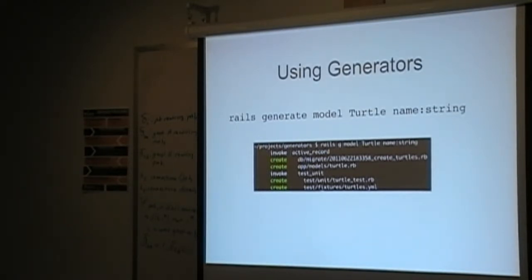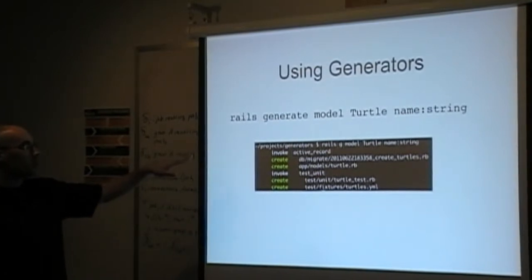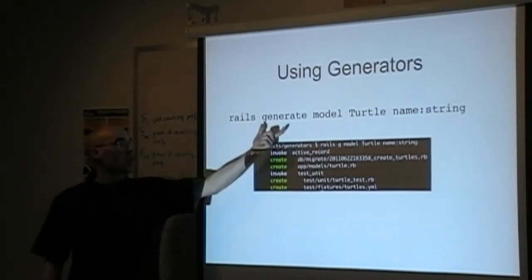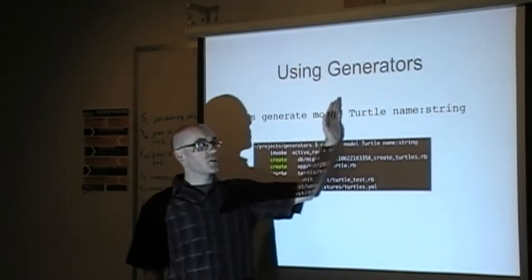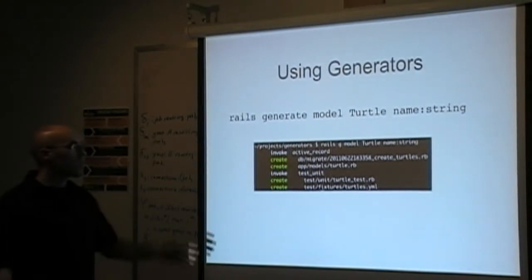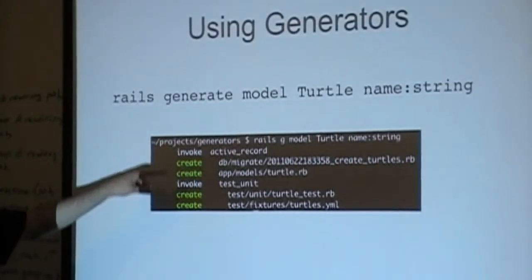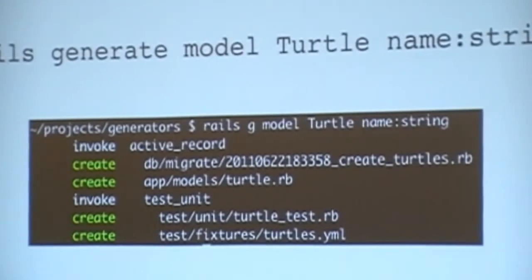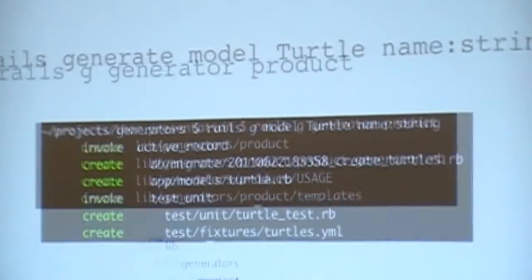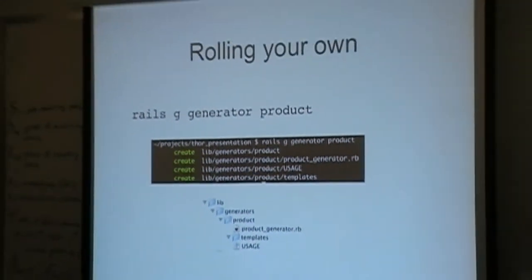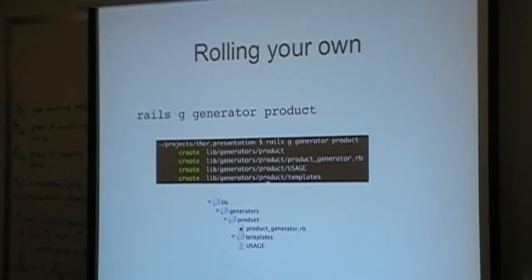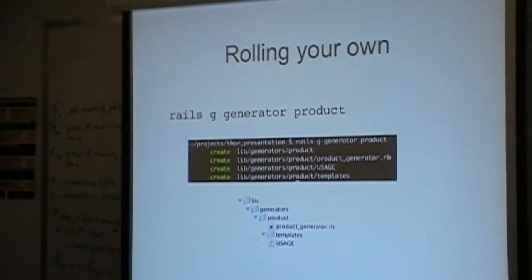This is probably familiar to most folks, but I want to start as an orientation. In Rails 3 you say 'rails generate,' give it the name of the generator you want to run, and the rest is command line arguments. In this case we're creating a model called turtle with a single string attribute. By default it'll invoke an Active Record generator, generate a migration and a class, and create some tests and fixture data. What's more interesting is when you want to roll your own generator — very helpful if you have a library that needs to add a bunch of things to other projects.